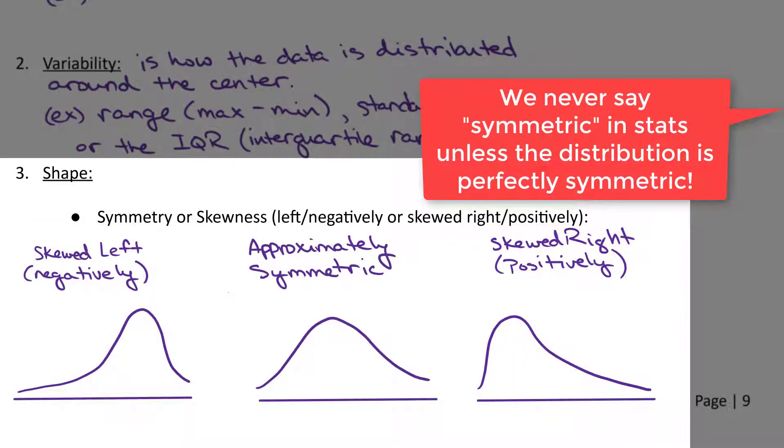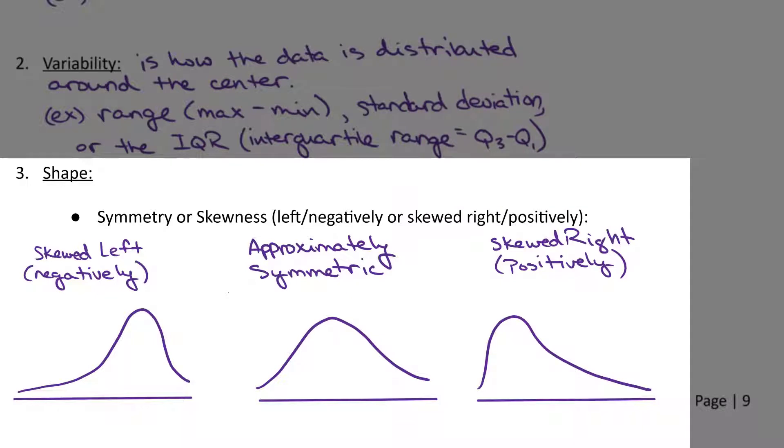Now, these are nice smooth curves. Usually, data is a little more choppier than this, but to get the idea of these shapes, for a skewed left distribution, you can see over here where your extreme values are. We call that the tail.